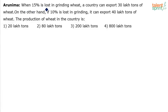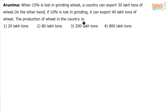When 15% is lost in grinding wheat, a country can export 30 lakh tons of wheat. On the other hand, if 10% is lost in grinding, it can export 40 lakh tons of wheat. The production of wheat in the country is what? Options are given: 20, 80, 200, and 800.